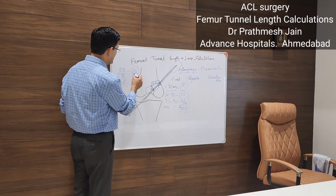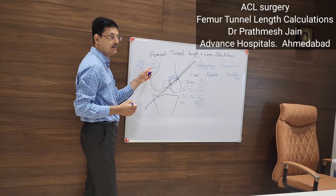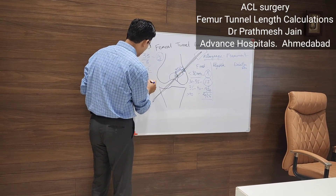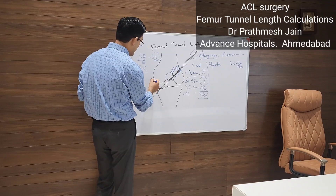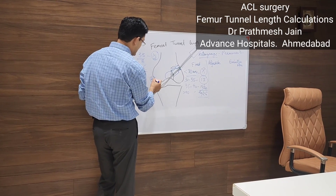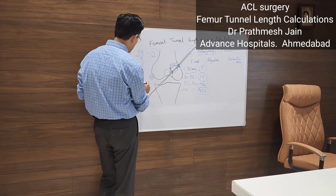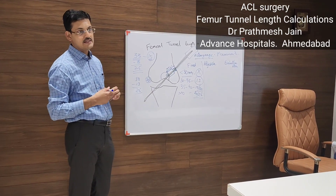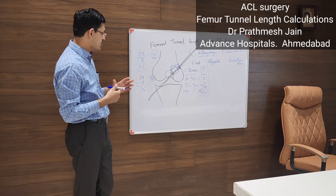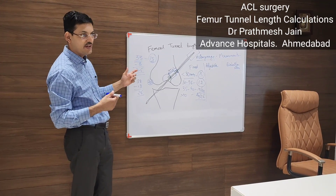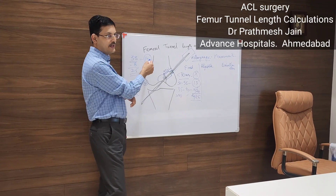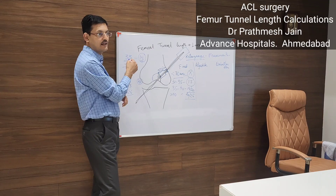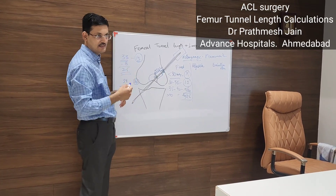Another example: if your tunnel length is 39 mm and you plan to use a 20 mm button, 7 mm is the flipping distance. So 39 minus 20 is 19, minus 7 more gives 26 — you have to drill up to 26 mm. The formula is: tunnel length minus button size minus 7 mm flipping distance equals the required drilling depth.